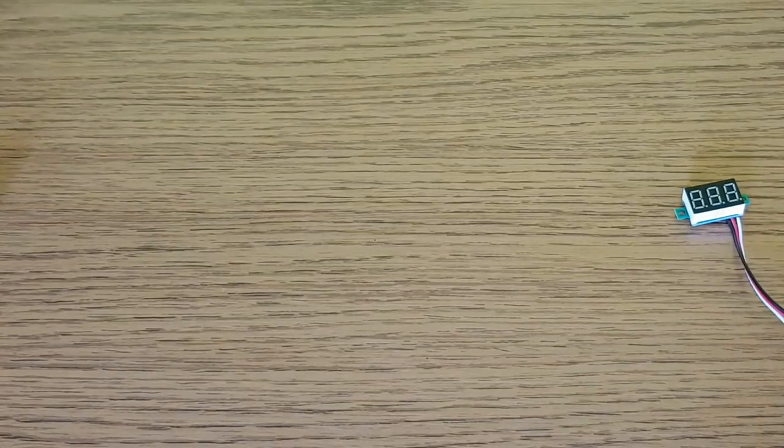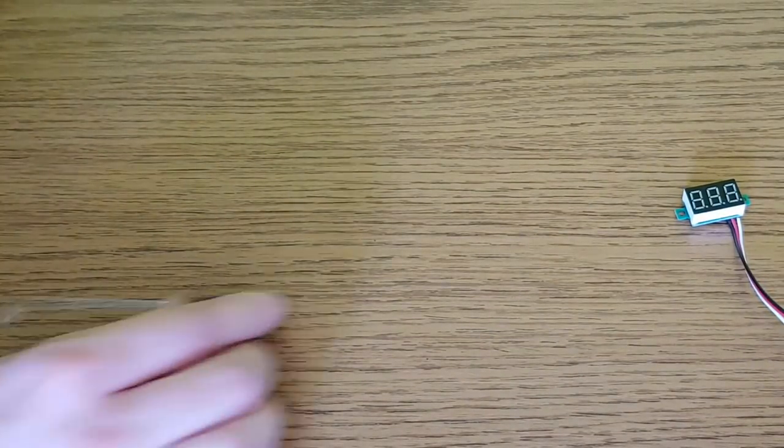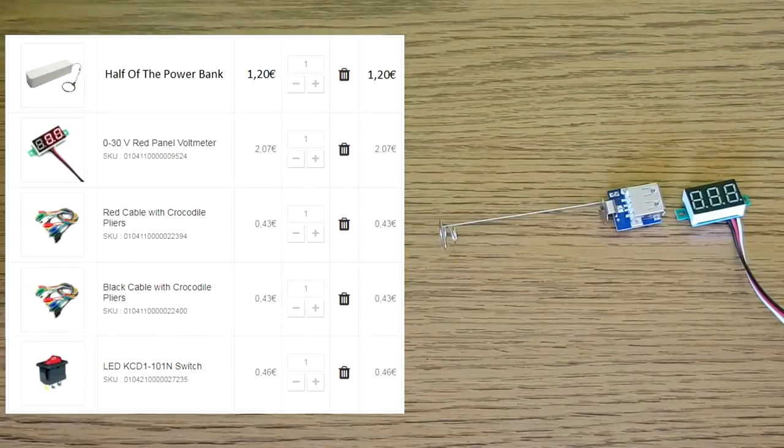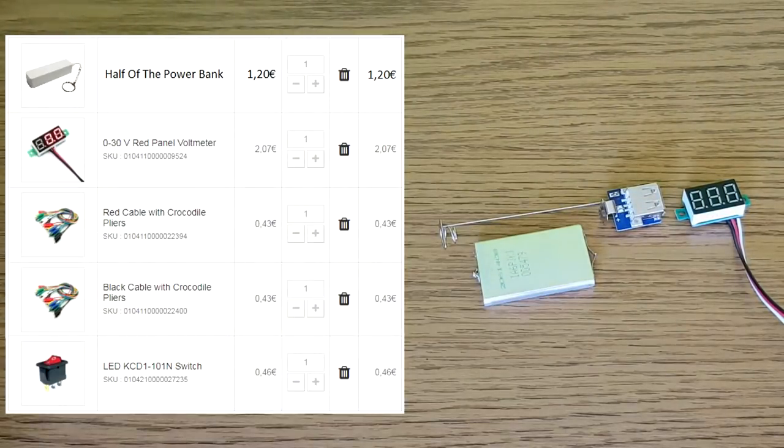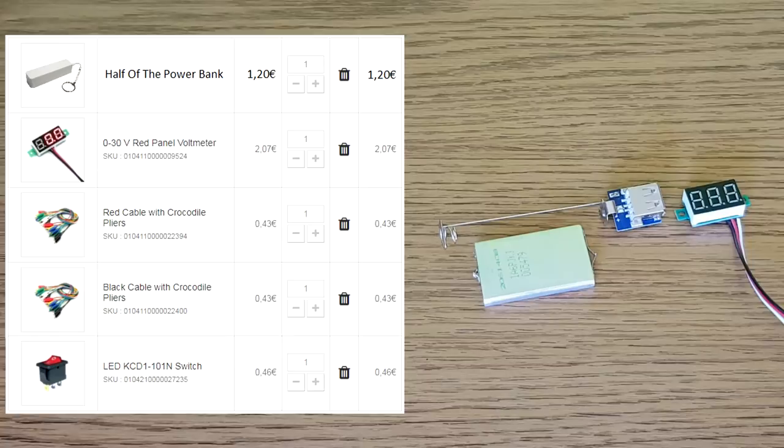Enough measurements, let's get on with the build. What are the minimum requirements to build the voltmeter? A panel voltmeter. Half of the power bank. A lithium battery.